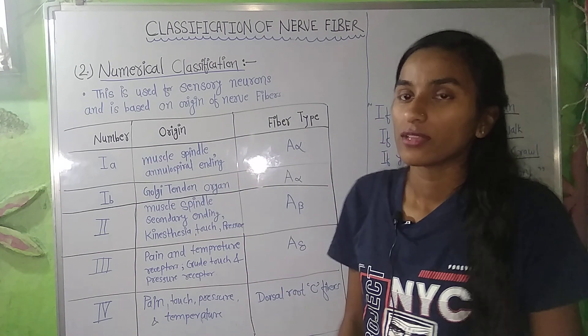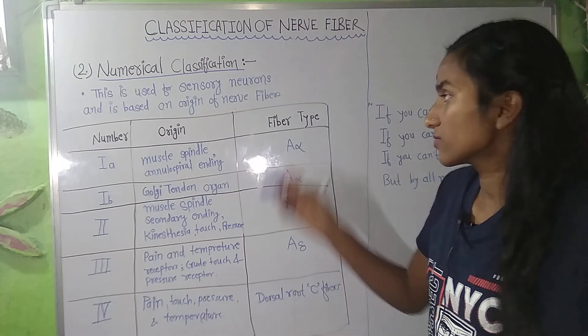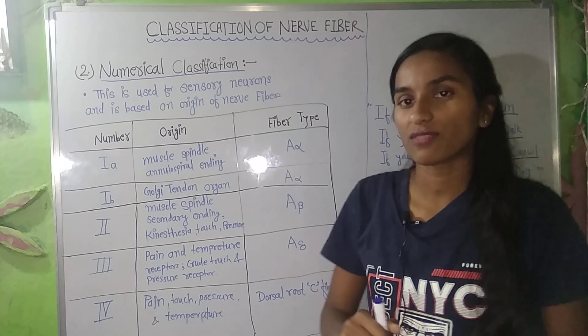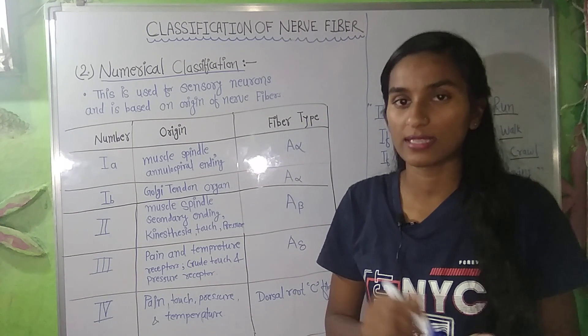In numerical classification, we refer back to the Erlanger classification, which had various fiber groups: A, B, and C.